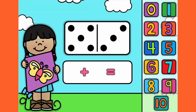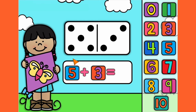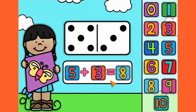1, 2, 3, 4, 5. Let's count them all together. 1, 2, 3, 4, 5, 6, 7, 8. 5 plus 3 equals 8.